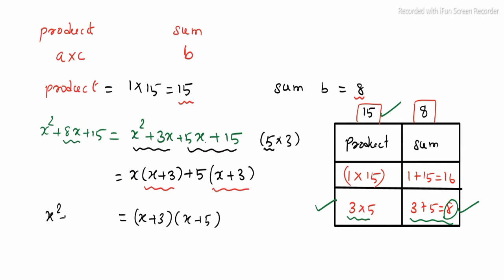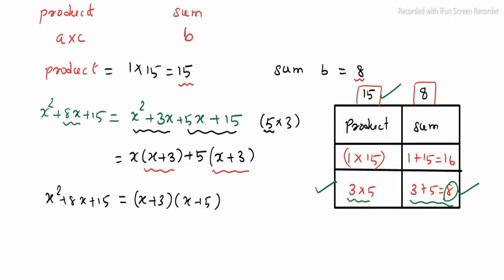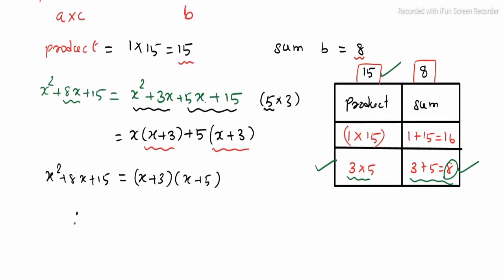On the left side, x square plus 8x plus 15. Therefore, x plus 3 and x plus 5 are two factors.